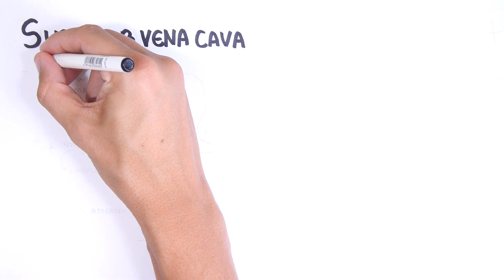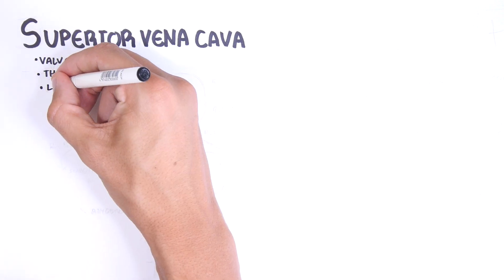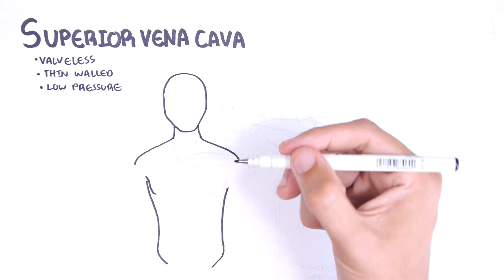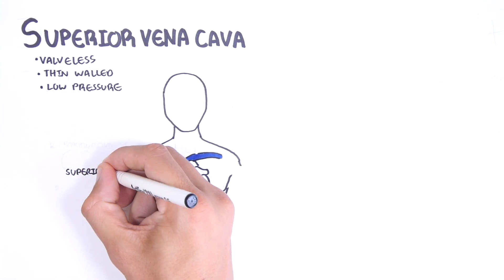The superior vena cava is a valveless thin-walled low-pressure tube that drains deoxygenated blood from the upper half of the body including the head, arms, and thoracic wall into the right atrium of the heart.